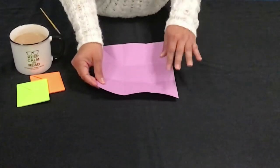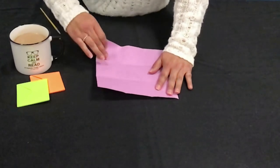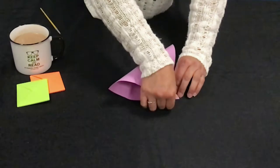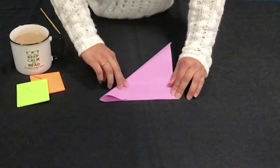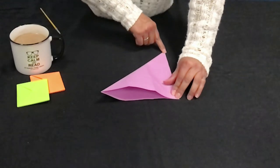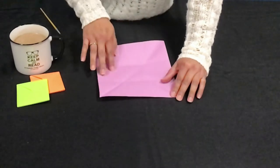We're going to turn our paper and do the same thing again. Fold this halfway over leaving the middle untouched. Push down here, out, here out. We left the middle untouched.